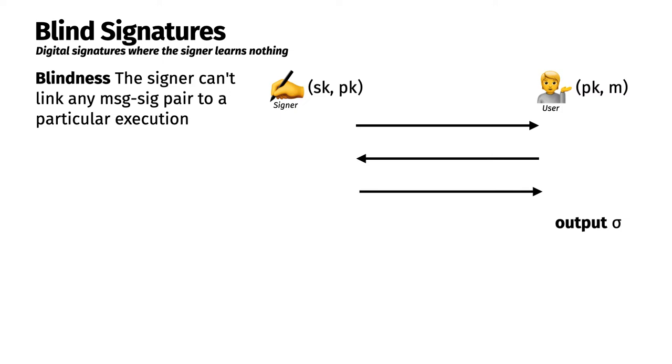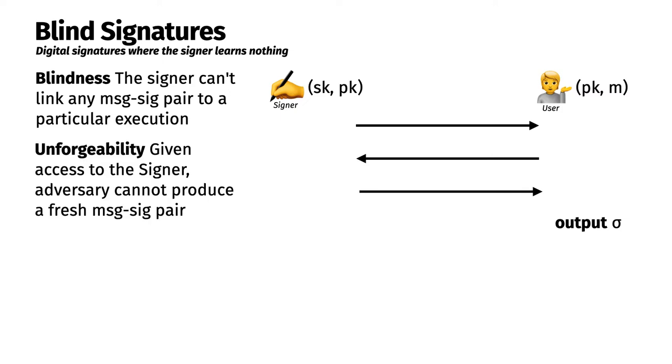The next security property is similar to one in digital signatures. A signature scheme is unforgeable if, given access to a signing oracle, the adversary can't produce a fresh message-signature pair, i.e. one that the signer hasn't seen yet. The problem with this definition in the case of blind signatures is that every message-signature pair looks fresh because all the messages were signed blindly.